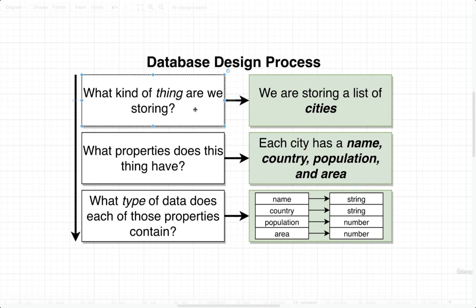The first thing we ask ourselves is: what kind of thing are we storing? We're then going to ask what properties this thing has, and finally, what type of data each of those properties contains. For a list of cities, we can answer these pretty easily. We're storing a list of cities. Each one has a name, a country, a population, and an area. The name and country are probably going to be strings of characters, and population and area are probably going to be numbers.